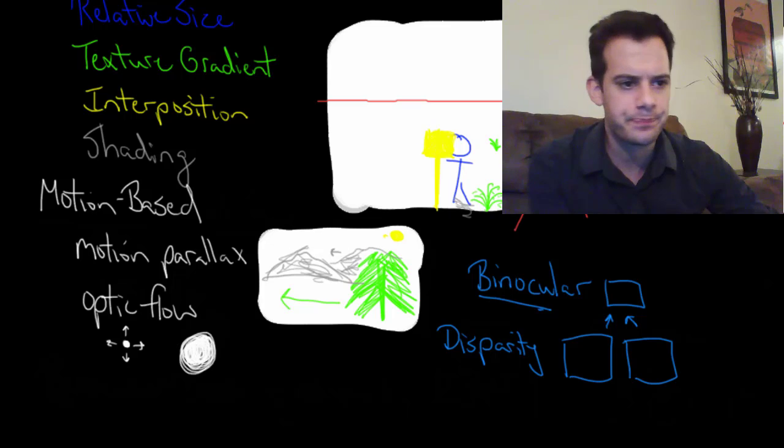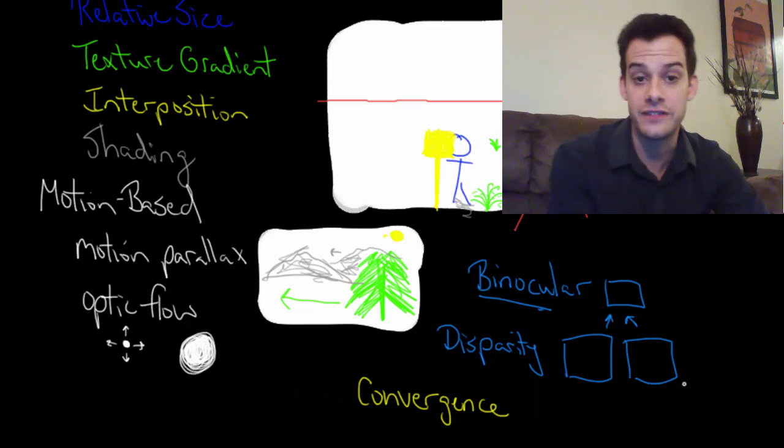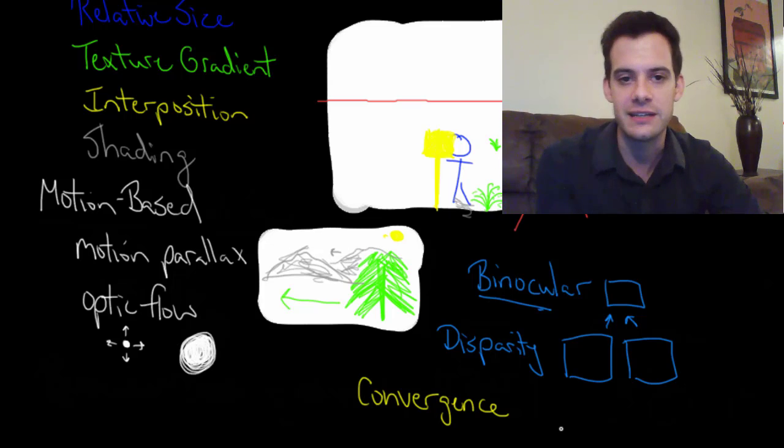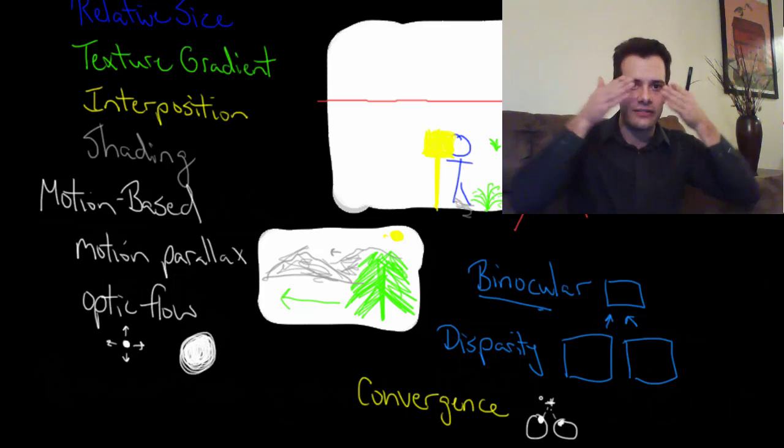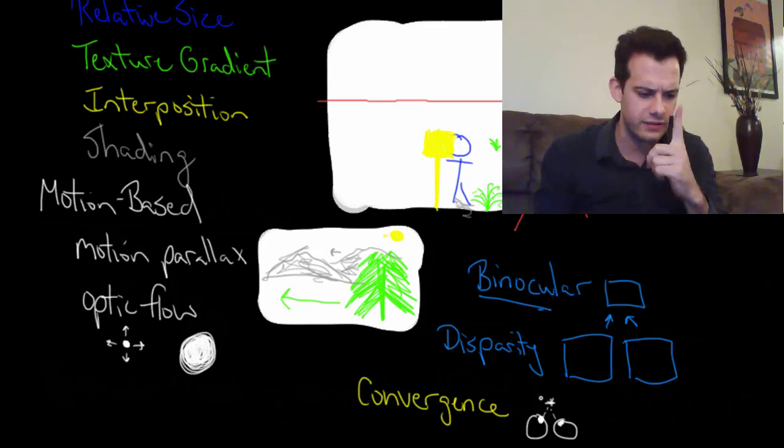And the last cue that we have is called convergence. This is the idea that we have two eyes and that we have to move them differently depending on whether something is close to us or far away from us. Let's imagine these are my two eyes here. If I'm looking at something that's really close to me, I have to point my eyes at this very narrow angle. I have to actually move the muscles around my eyes and sort of point them in like this to look at my finger.